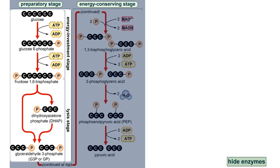During the preparatory stage of glycolysis, energy is invested in the form of ATP to prepare glucose for utilization by the cell. This stage can further be divided into the energy investment stage, during which ATP is used to phosphorylate glucose, and the lysis stage, during which the doubly phosphorylated glucose molecule is cleaved into two phosphorylated three-carbon sugars.